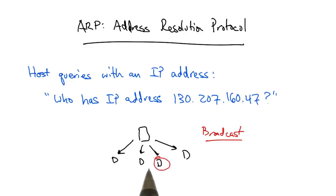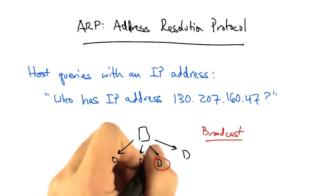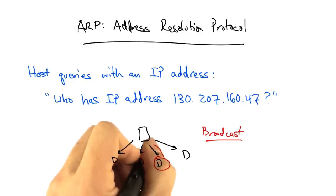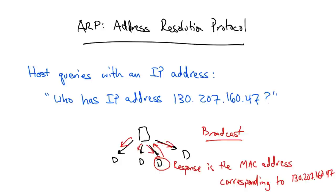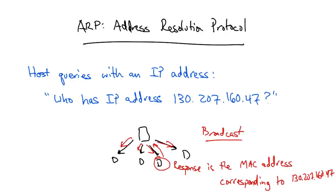The particular host who has that IP address on the LAN will respond with the appropriate MAC address. The ARP query is a broadcast that goes to every host on the LAN from the host that wants the answer, and the response is a unicast response with the MAC address as the answer, returned to the host that issued the query.